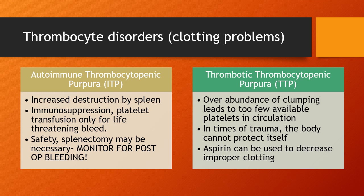Thrombocyte disorders include ITP — idiopathic thrombocytopenic purpura — and TTP — thrombotic thrombocytopenic purpura. ITP, also called autoimmune, is when there's increased destruction of thrombocytes by the spleen for an autoimmune reason — the spleen recognizes your platelets as foreign. Treatment is immunosuppression to stop the spleen from destroying platelets, but this suppresses the entire immune and lymphatic system, putting you at high risk for infection. Platelet transfusion is only used for life-threatening bleeding. Safety and bleeding precautions are the primary nursing goal. Splenectomy may be necessary and requires vigilant monitoring for post-op bleeding, including abdominal distension, retroperitoneal bruising, tachycardia, tachypnea, and dropping blood pressure.